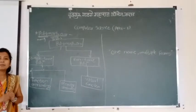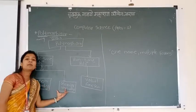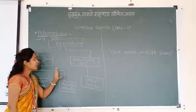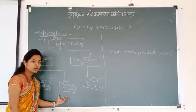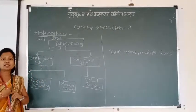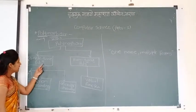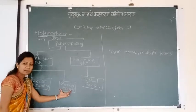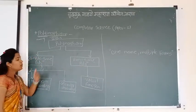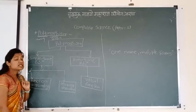In compile time polymorphism, one name and multiple forms are achieved through function overloading and operator overloading. Runtime polymorphism is achieved through virtual function. Compile time polymorphism is also called static binding, and runtime polymorphism is also called dynamic binding.